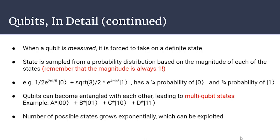Qubits can become entangled with each other, leading to multi-qubit states. For two qubits, there are coefficients for each of the four possible states: |00⟩, |01⟩, |10⟩, and |11⟩. This leads to 2^n states for n qubits — for one qubit we have two possible states, for two qubits we have four, and each additional qubit doubles it again, giving an exponentially growing number of states.